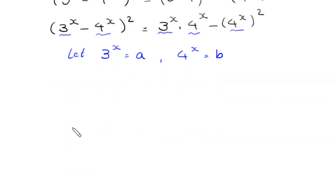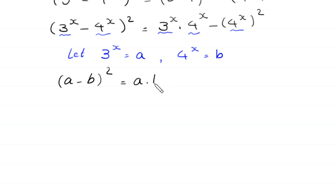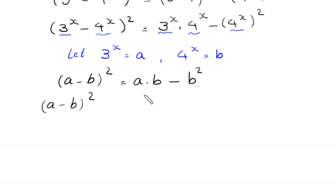Substituting a and b into the equation, it becomes: a minus b, whole squared, equals a times b minus b squared. Moving a times b and negative b squared to the left side gives: a minus b whole squared, minus ab, plus b squared equals 0.